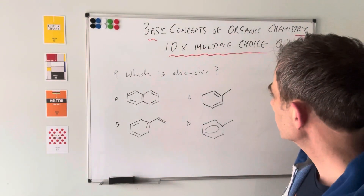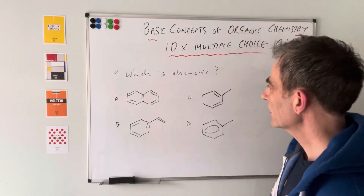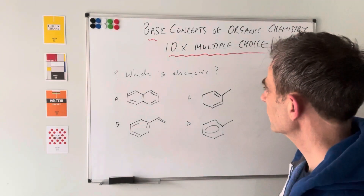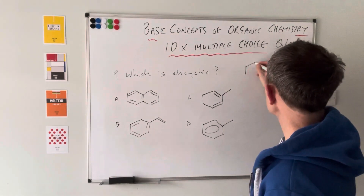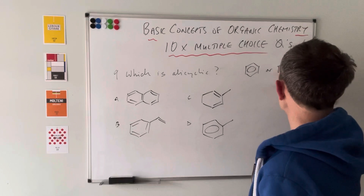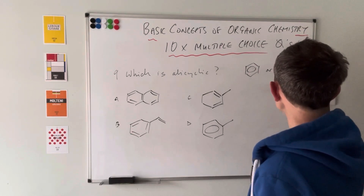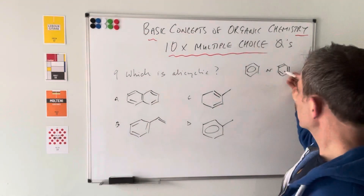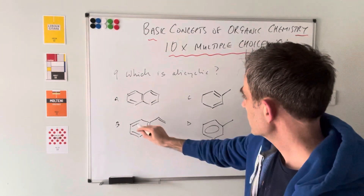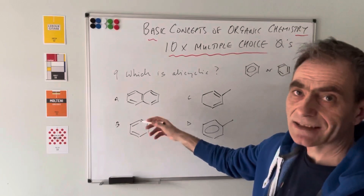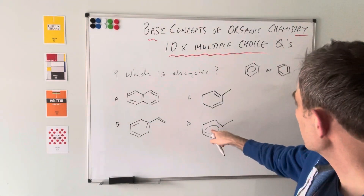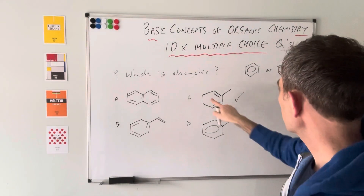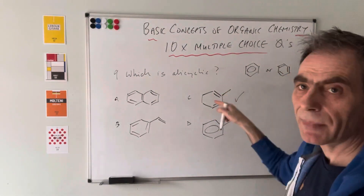Question nine: which of the four structures is alicyclic? This tests knowledge of how benzene rings are represented — either as a hexagon with a circle inside, or with three alternating carbon-carbon double bonds. Options A, C, and D all contain one of these benzene representations, making them aromatic rather than alicyclic. Option B has a ring that is not a benzene ring, so it's alicyclic — that's the answer.